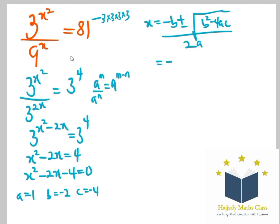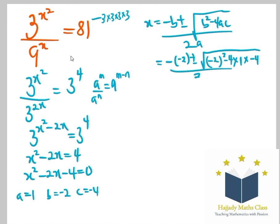So, x equals minus b, which is negative 2, plus or minus root of b squared — which is negative 2 squared — minus 4 times a, which is 1, times c, which is negative 4, all over 2 times 1. So, 2 squared gives 4, plus 4 times 1 times 4 gives 16, all over 2.